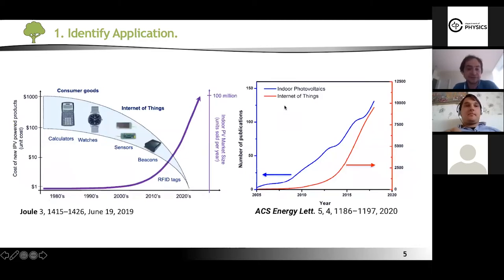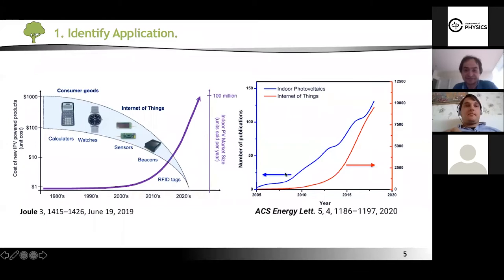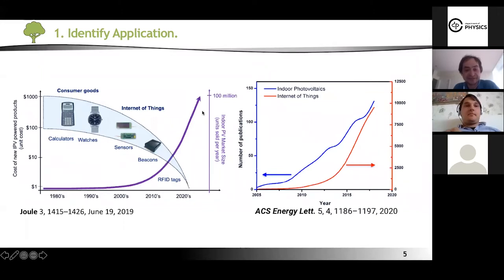Indoor photovoltaics is very important because in the last decade you can see a dramatic increase in publications about the Internet of Things. This means many devices are needed for smart technology. Indoor photovoltaics can give power and increase the working time of these devices. There are a few hundred publications on this, and more researchers are focusing on indoor photovoltaics because the market will dramatically increase — making it very important to design and develop devices for indoor applications.